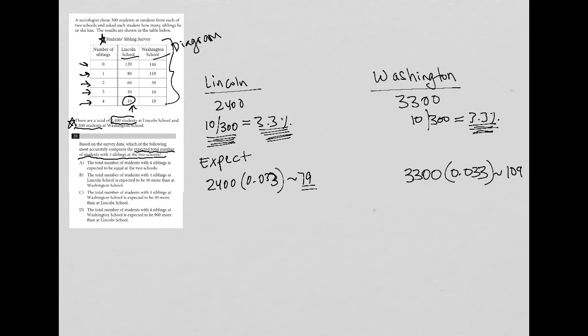So now we go to the answer choices. So choice A says the total number of students with four siblings is expected to be equal at the two schools. Well, our math shows us that that's not the case.